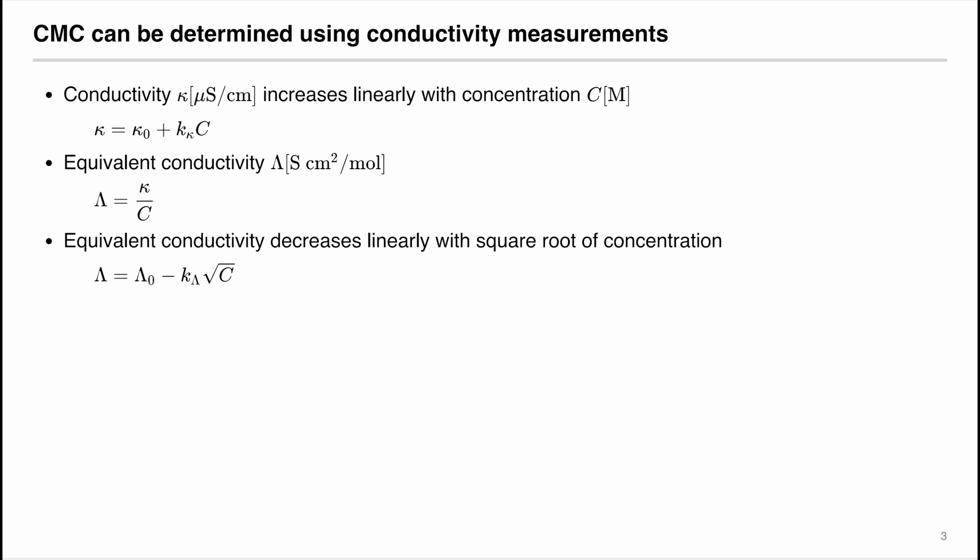Since we are using conductivity to determine the CMC, let us first discuss the relationship between conductivity and concentration. Conductivity κ, usually with units of microsiemens per centimeter, increases linearly with the concentration. So when we graph the conductivity κ with respect to concentration, we expect to see a linear increase, where the y-intercept is κ₀, a constant, and the slope is kκ, which is also a constant.